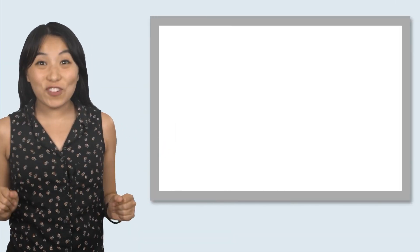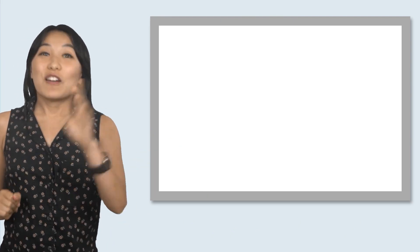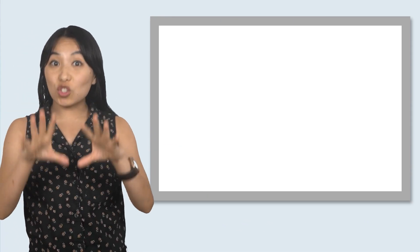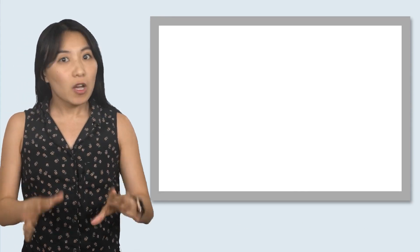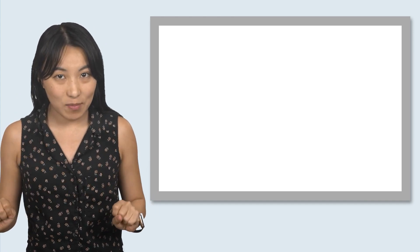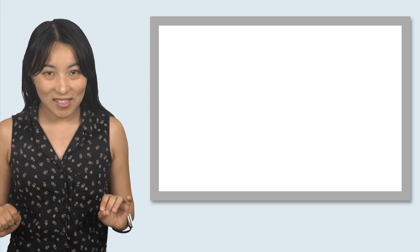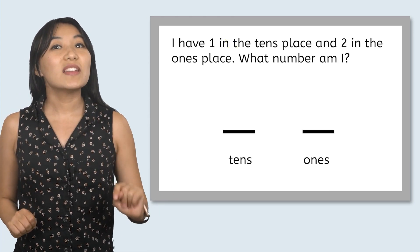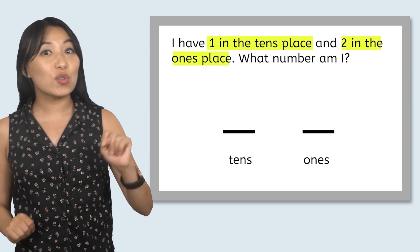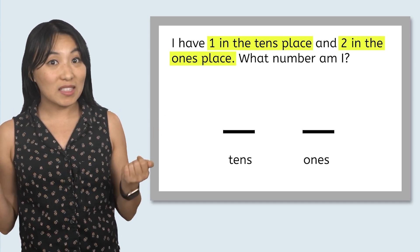We solved the first mystery number. Remember, you can write the answer on your math mystery too. Let's take a look at the next mystery number. This one says, I have one in the tens place and two in the ones place. What number am I?